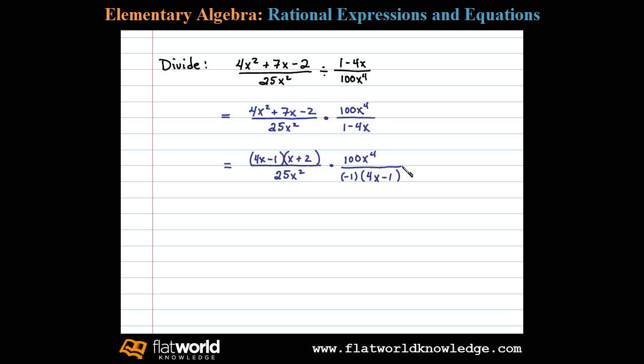Once we have both expressions factored, we can then cancel. Here 25 divides into 100 four times. x squared cancels with 2 x's here, leaving me with 4x squared in the numerator. And then the factor 4x minus 1 in the numerator and the factor 4x minus 1 in the denominator here cancel.